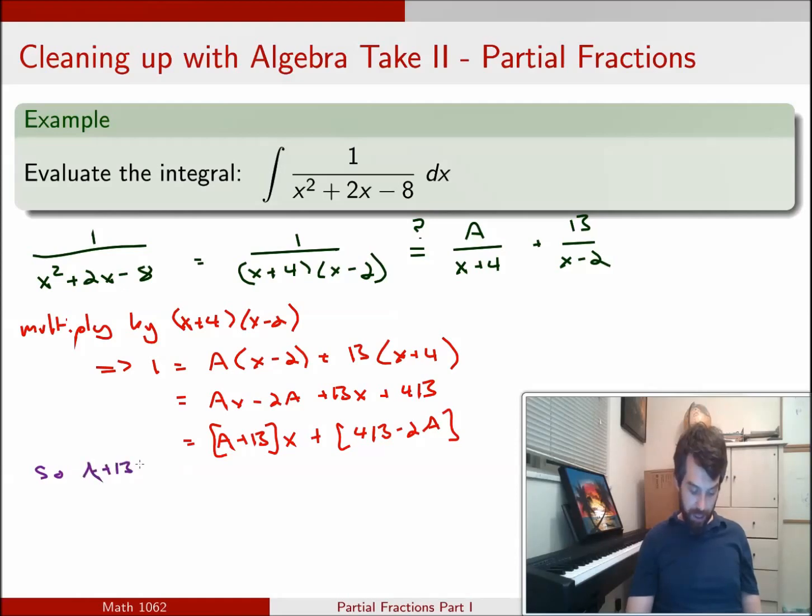you can think of the left hand side as 0 times x plus 1. The coefficient in front of the x has to be equal to 0. In other words, I can break this single equation up into 2. One says that A plus B has to equal 0, and then the other one is going to tell me that 4B minus 2A has to equal the value of 1.